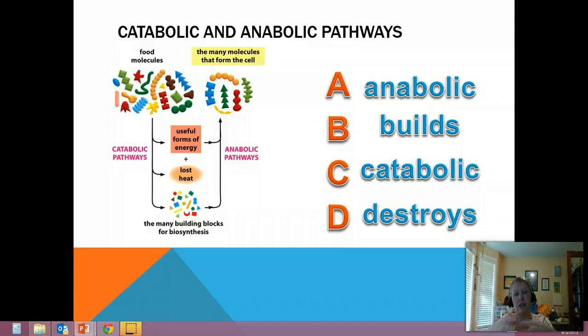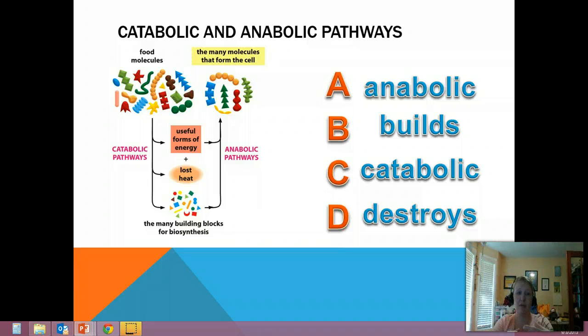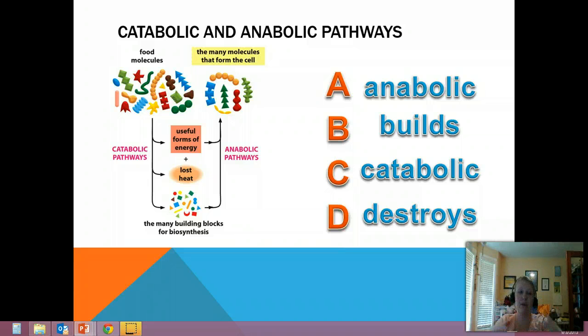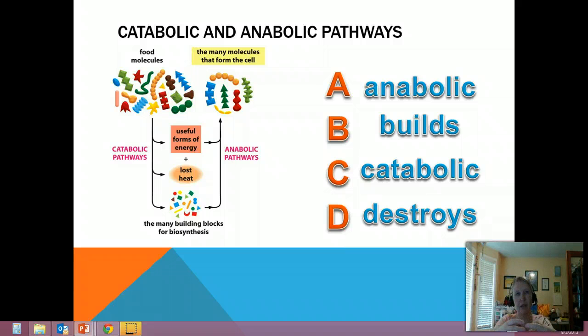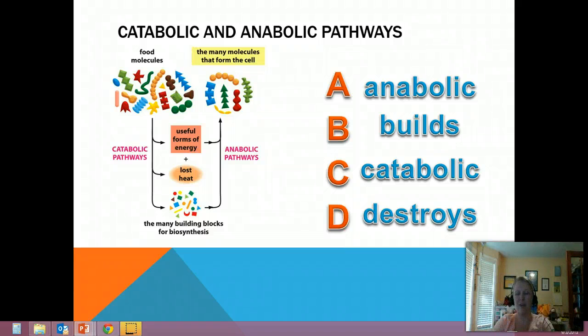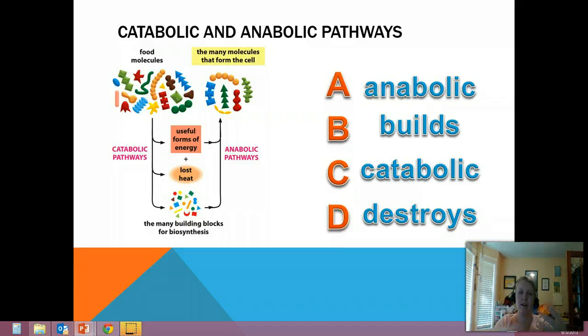Anabolic processes build. So they take those building blocks, they take that usable form of energy, and they put them together into new molecules that the cells need. So if we're going to be building a new cell wall, for instance, or we're getting ready to undergo division, need to make a new mitochondria. That's where all this is coming from, is from those building blocks and from the energy that's released during the catabolic processes.